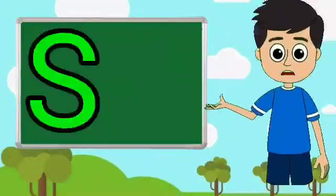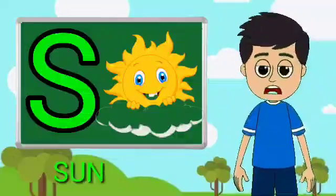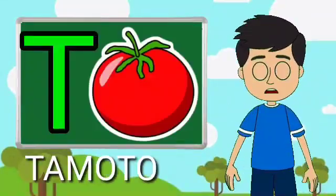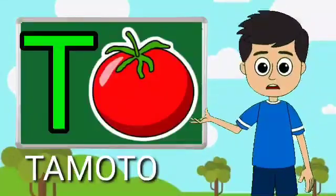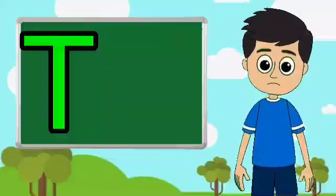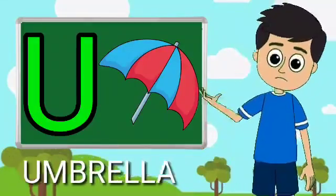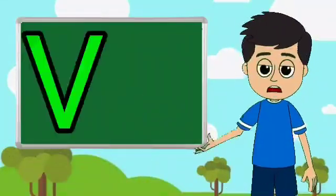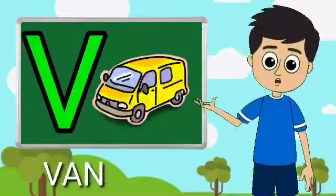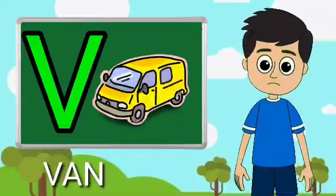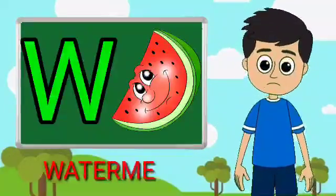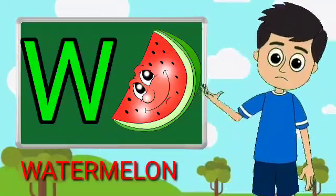S for sun, T for tomato, U for umbrella, V for van, W for watermelon.